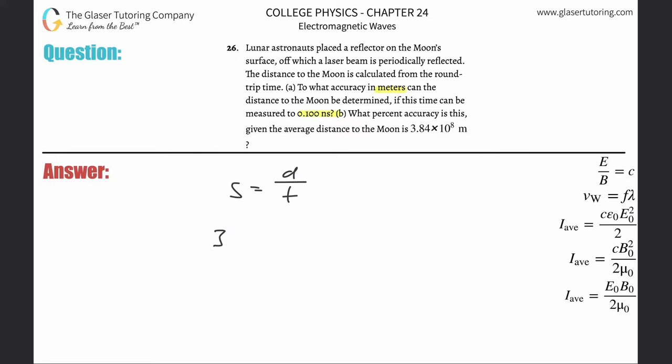So if the speed of the light here is 3 times 10 to the 8, and I plug in 0.1 times 10 to the minus 9th there down there for seconds, then what I'm finding here is I'm finding the distance that I can be off by. Because they can measure the time within 0.1 nanoseconds.